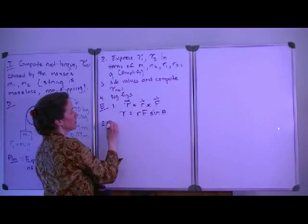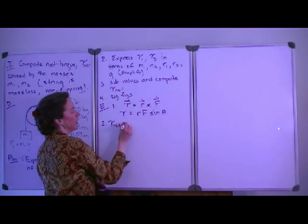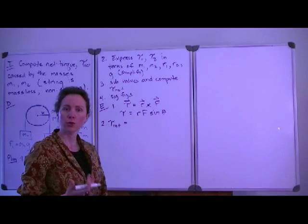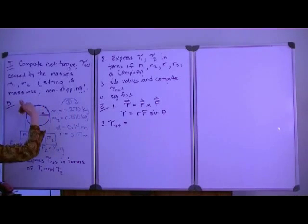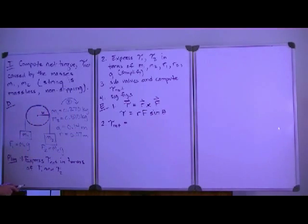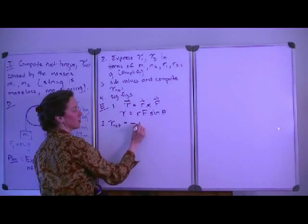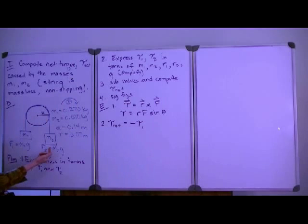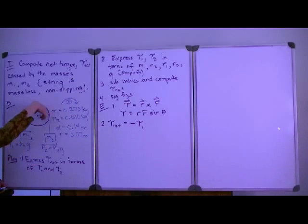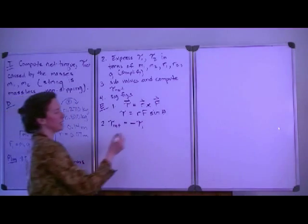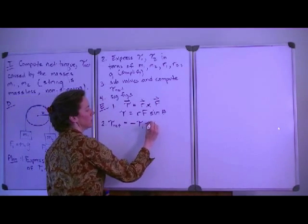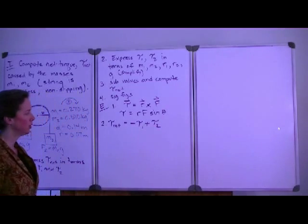So now we want to express that net torque in terms of the two torques caused by the two masses. Now let's take a look at that. Mass 1 is going to cause the pulley to rotate in a counterclockwise direction, which is in a negative direction. So its magnitude will be negative. So we have minus tau1. The torque exerted by the second mass will cause the pulley to rotate in a clockwise direction, which we have designated as the positive direction. So we have minus tau1 plus tau2.